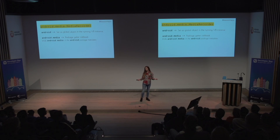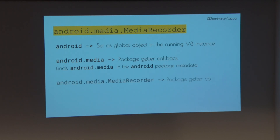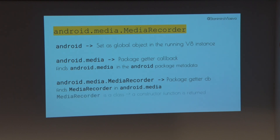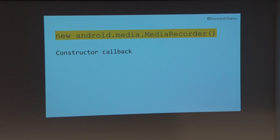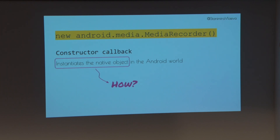The same thing happens for Android.media.MediaRecorder — a package getter callback is called and we find the MediaRecorder class inside Android.media. Because MediaRecorder is a class, we get back a constructor function. When we invoke the constructor function with 'new', a constructor callback fires. The job of the constructor callback is to actually create the Java object — the actual Java object in the Android world — through the running JavaScript engine.